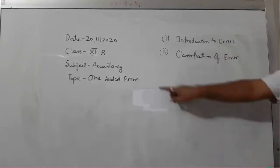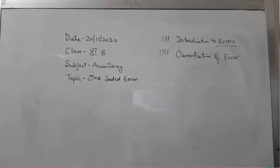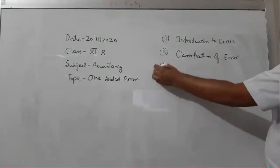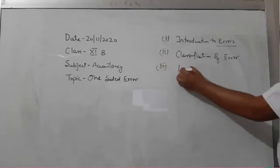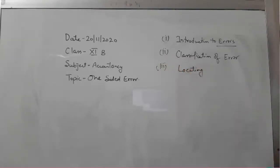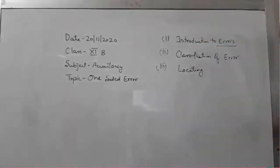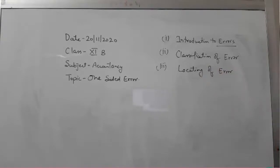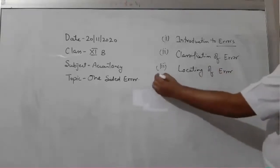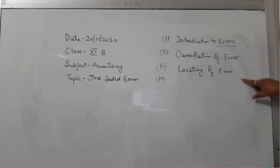One-sided errors are those errors which affect only one side of the books of account, whereas a two-sided error is a type of error which affects two sides of the books of account. The third topic included in this chapter is locating of errors. We have to learn how to search for errors because the rectification of the error is totally dependent on the locating of the error. Location of the error will be found out before the preparation of the trial balance and after the preparation of the trial balance.